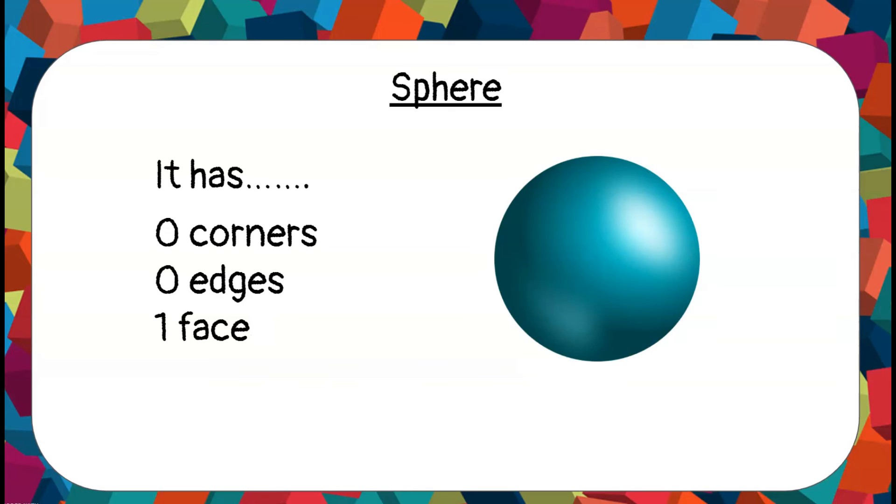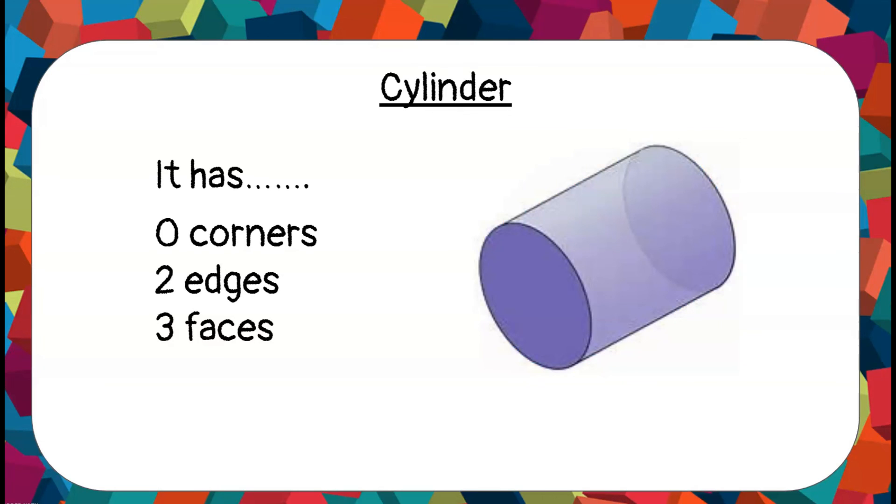This is a sphere. It has zero corners, zero edges, and one face. This is a cylinder. It has zero corners, two edges, and it has 1, 2, and 3 faces.